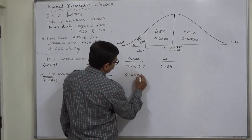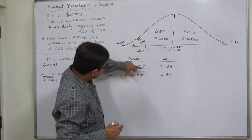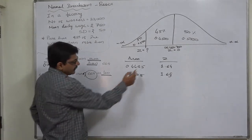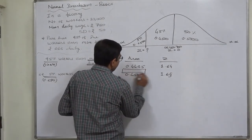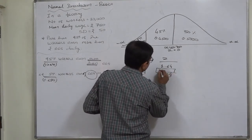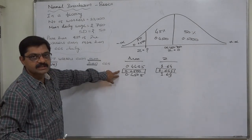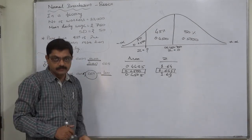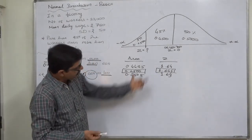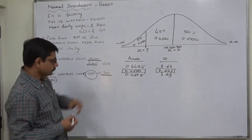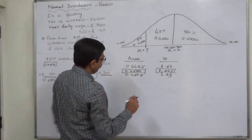Area 0.4495 gives Z = 1.64; area 0.4505 gives Z = 1.65. Now 0.45 exactly falls between these two, and the difference is equal in both cases. In this type of case, we should consider the mean value. So we are going to take the value of Z as 1.645, instead of 1.64 or 1.65, because these two are equidistant.